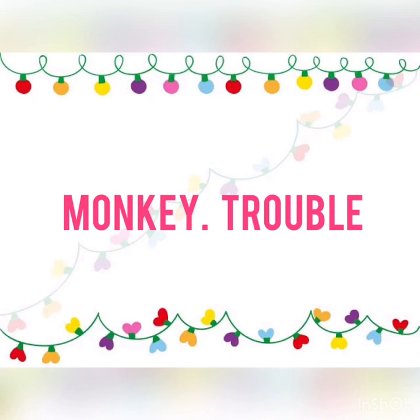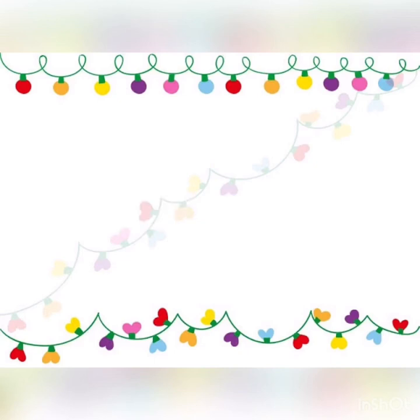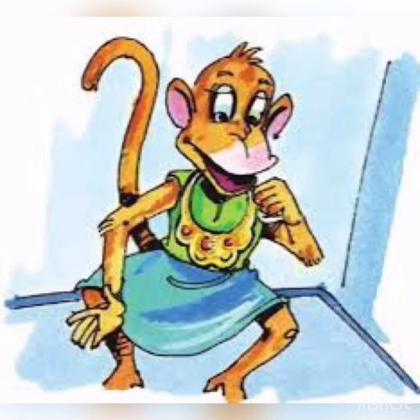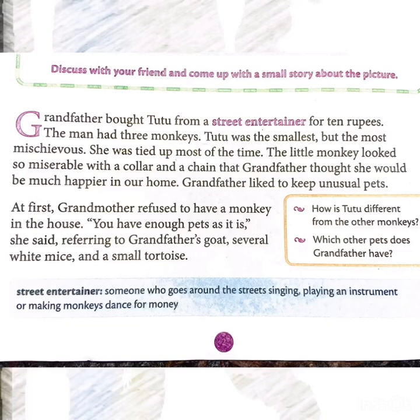Our first chapter, Lesson Number One, 'Monkey Trouble,' is all about the naughty nature of a monkey named Tutu, a female monkey who creates trouble at home and in the city. The story begins: Grandfather bought Tutu from a street entertainer — someone who goes around the streets singing, playing instruments, or making monkeys dance, which we always see on our streets.